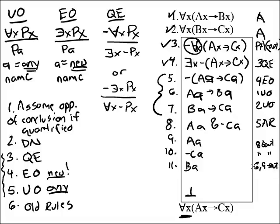And then on line 12, we can do another arrow out here. With seven and 11 gives us CA, seven, 11, arrow out. And then 13, we should have a contradiction. 10 and 12 would be CA ampersand dash CA. 10, 12 ampersand in.